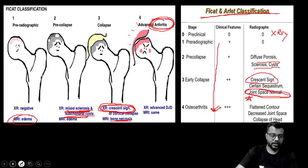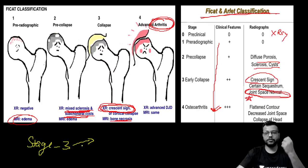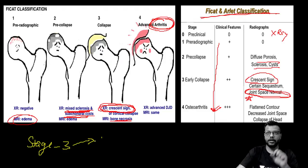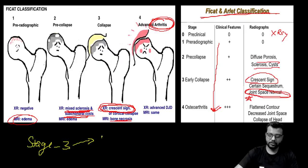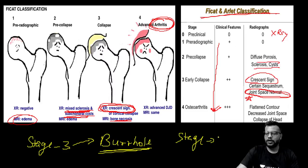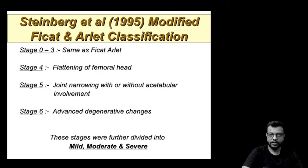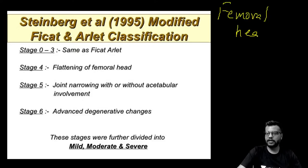Till Stage 3, procedures other than complete joint replacement are possible. You can perform bur hole drilling — a procedure using a hollow drill bit to make bur holes in the femoral head to decompress and promote revascularization. Beyond Stage 3, joint replacement is required.